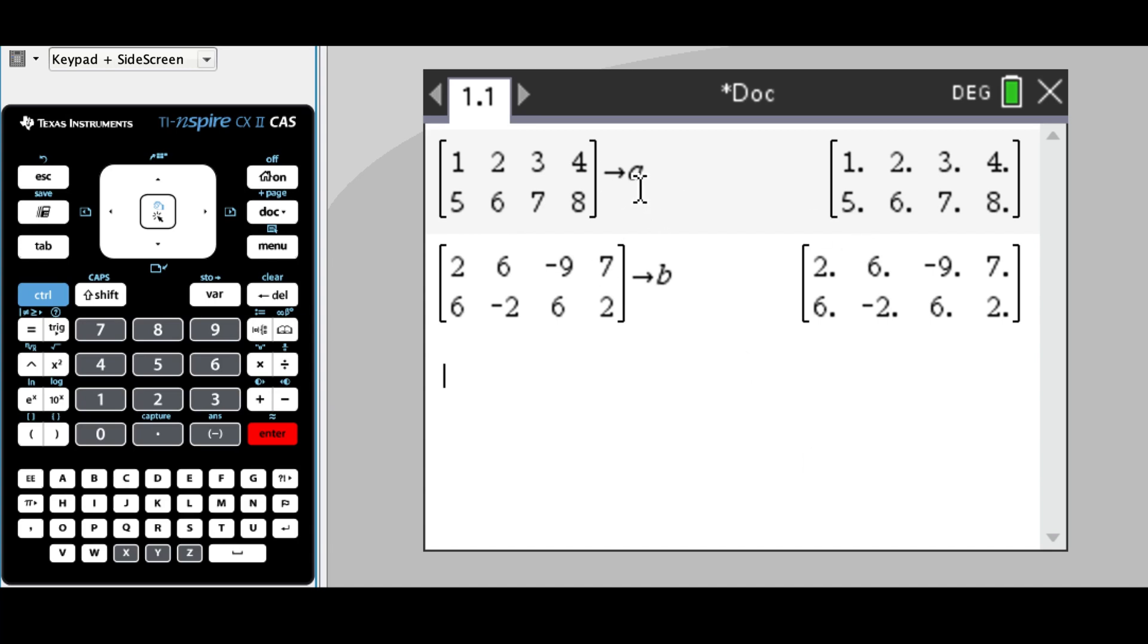I've entered in my matrices, I've called one 'a' and the other one 'b'. If I want to do the first matrix plus the second matrix, all I need to do is a + b. You'll notice that the letters are in bold because the CAS knows what variables you're talking about—it knows what matrices you mean. Press enter and it adds up the two matrices together.